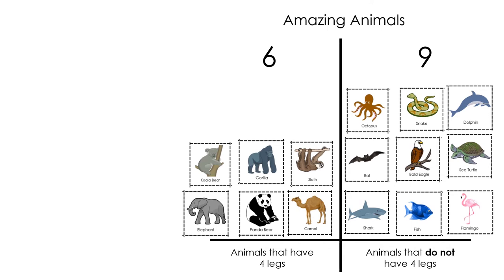Which category has the most animals? That's right, there are more animals that do not have four legs. Nine is greater than six.